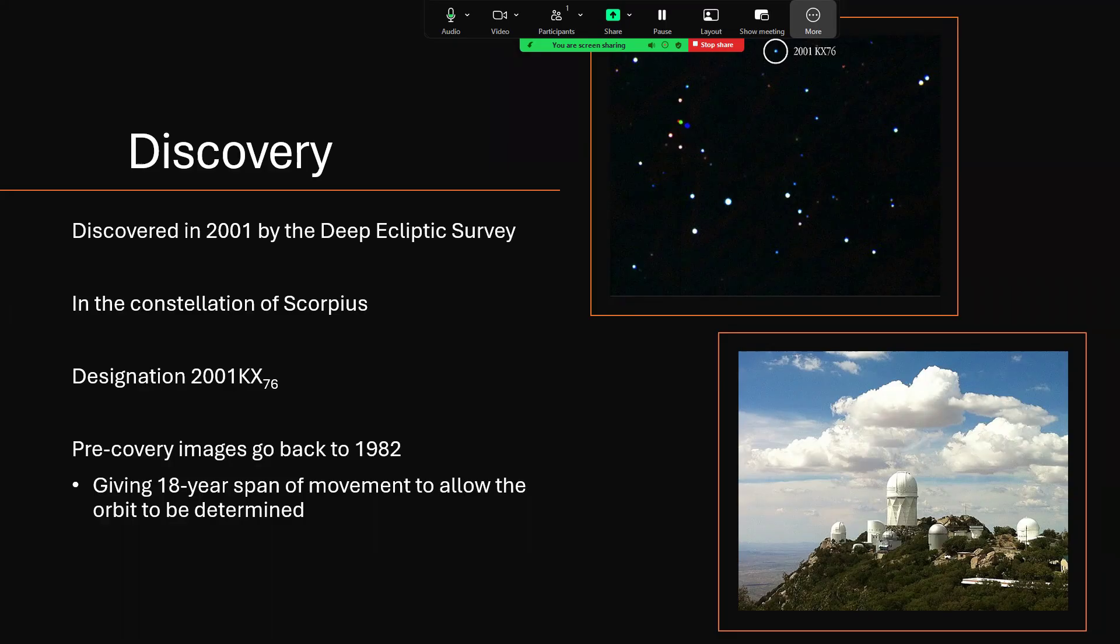This object was discovered in an unusual way by the Deep Ecliptic Survey in 2001, lurking in the constellation of Scorpius. Scorpius is, of course, the direction towards the center of our galaxy, so there are a tremendous number of stars in this direction. Quite tricky then to pick out a small moving object.